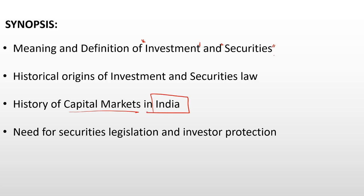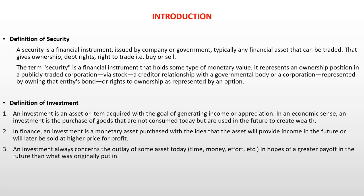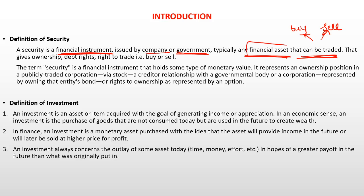Let's get started with the definition of security. A security is a financial instrument — normally a company or government issue — it is a financial asset that can be traded, meaning it can be bought or sold. It is a financial asset where if the company has issued it you get an ownership right, and if the government has issued it you get a debt right, and you have the right to trade it.